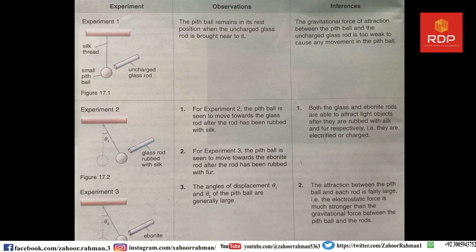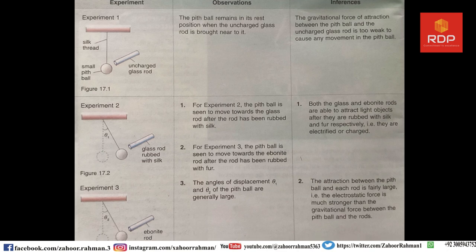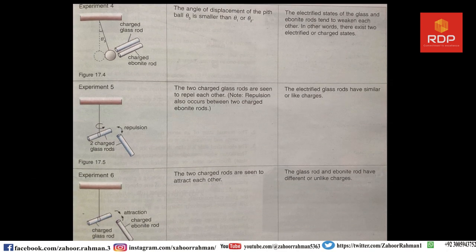From these three experiments we gathered the following: an uncharged glass rod does not produce any movement in the pith ball. In experiments two and three, when we charge the glass rod or ebonite rod with silk cloth or fur respectively, they attract the pith ball towards them. Now let's turn to experiment number four.